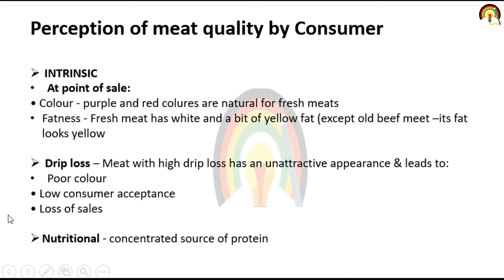Perception of meat quality by the consumer — intrinsic, at point of sale. First is color: purple and red color are natural for fresh meat. Fatness: fresh meat has white and a bit of yellow fat, except old beef meat whose fat looks yellow. Drip loss: meat with high drip loss has an unattractive appearance, leading to poor color, low consumer acceptance, loss of sale, and loss of nutritional quality. Meat is mainly a source of protein.